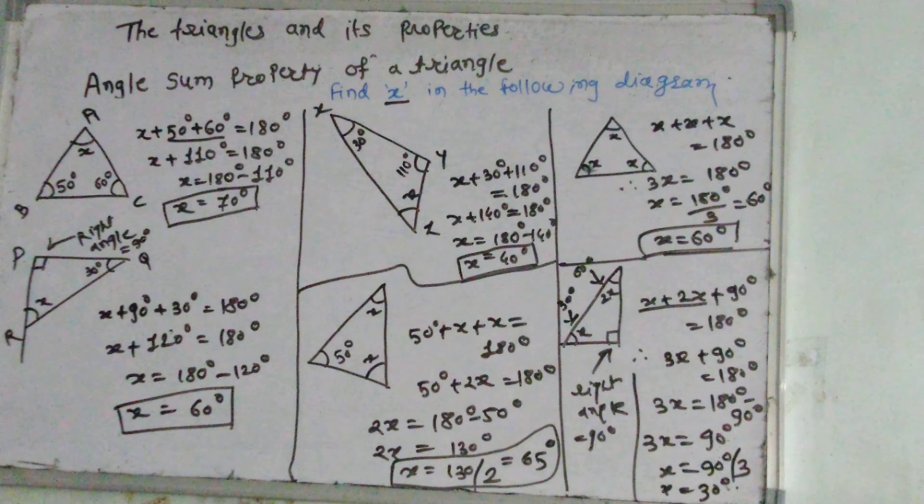X plus 2X plus 90 — right angle, equal to 90 degrees — equals 180 degrees. Therefore X plus 2X equals 3X, plus 90 equals 180 degrees. 3X equals 180 minus 90 degrees. 3X equals 90 degrees. X equals 90 divided by 3, equal to 30 degrees. 2X equals 30 into 2, equal to 60 degrees. This angle is 30 degrees and this angle is 60 degrees.